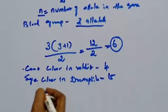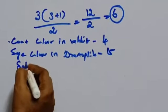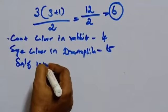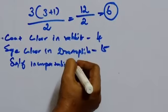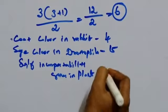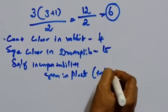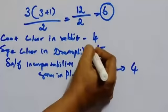Then tobacco. That is self-incompatibility genes in plants. Self-incompatibility genes in plants, it is tobacco. How many alleles? Four alleles.